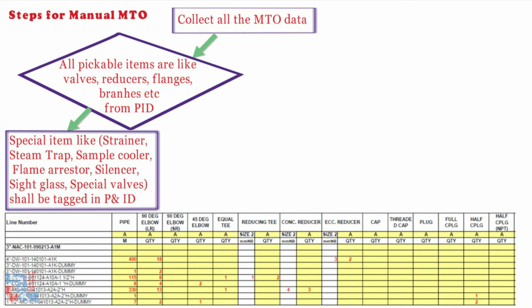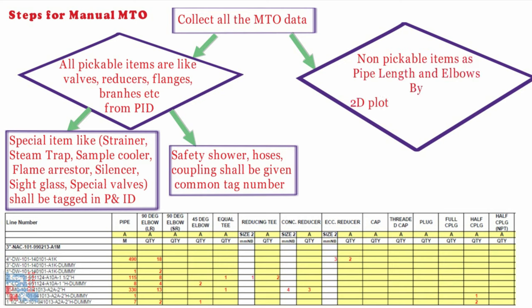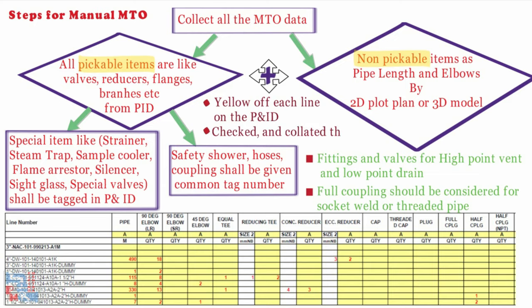For special items like strainers, steam traps, sample coolers, flame arrestors, silencers, sight glasses, and special valves, these shall be tagged in the P&ID. Items like safety showers, hoses, and couplings shall be given a common tag number distinctly. Non-pickable items such as pipe length and elbows are generated by routing each line shown on the P&ID and identifying a routing on the 2D plot plan or by routing the line directly in a 3D platform. Fittings and valves for high-point vents and low-point drains should be considered, and full couplings should be considered for socket weld or threaded pipe in long runs at 6 to 7 meter intervals. Then combine pickable bulk items and non-pickable items except piping special items. Yellow off each line on the P&ID as you go; once all lines are yellowed off, they can be checked and the data collated into the preliminary MTO.